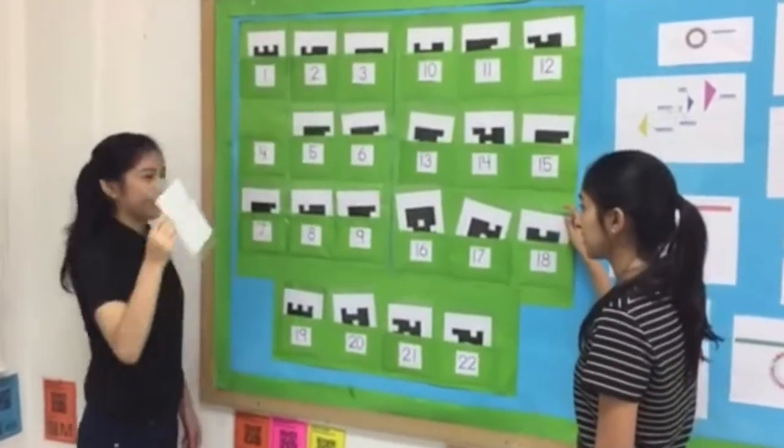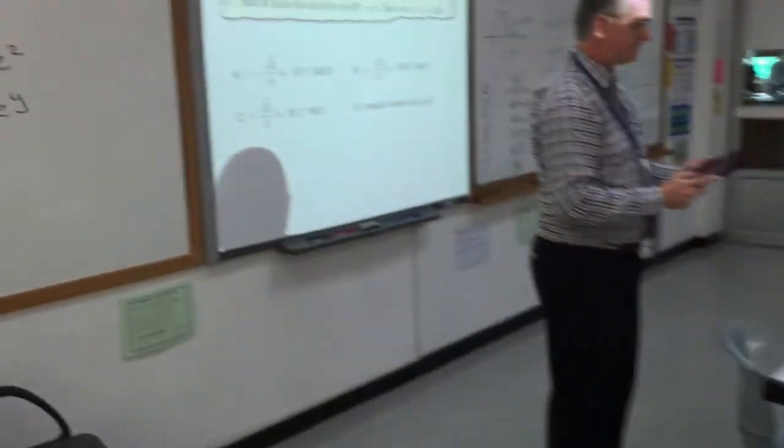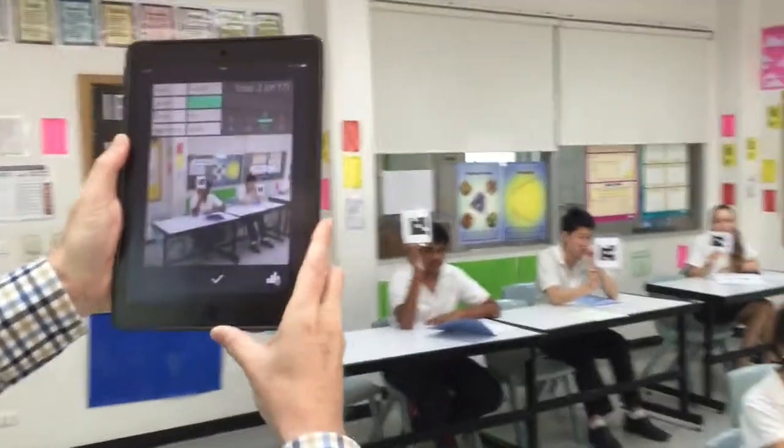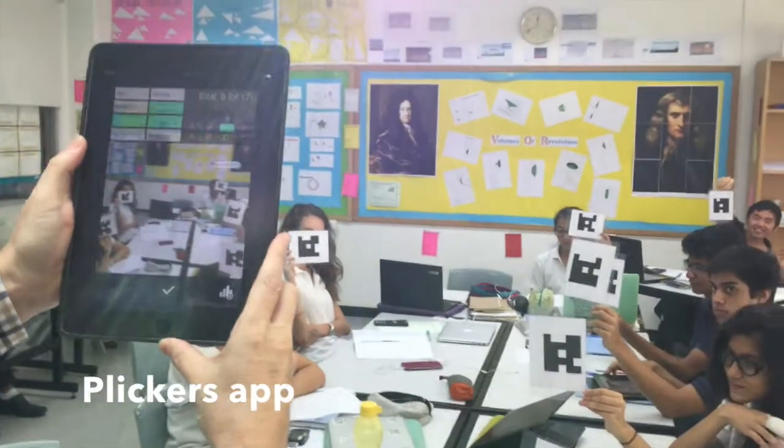Clickers is a formative assessment tool where students anonymously give their responses to a starter question or an exit quiz using QR codes. I always include the response D: I need help with this topic.